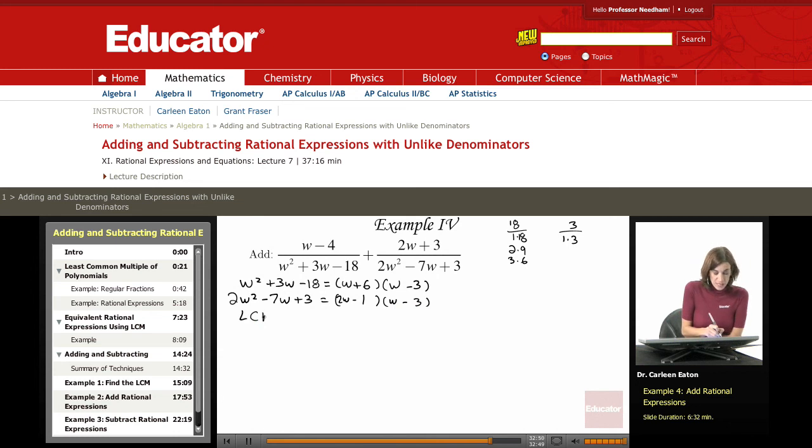I've got the denominators factored. I'm going to find the least common multiple. Okay, up here I have W plus 6, and I have a W minus 3. So the W minus 3 is taken care of. Down here, though, I also have 2W minus 1. So this is my least common multiple.